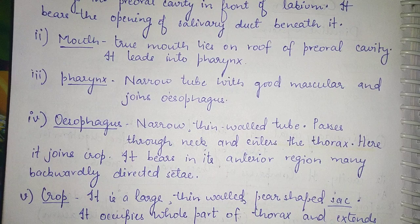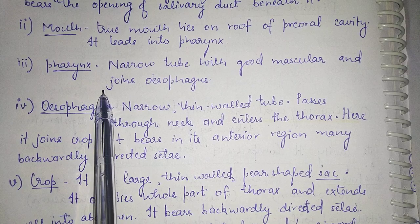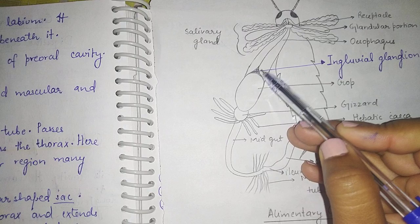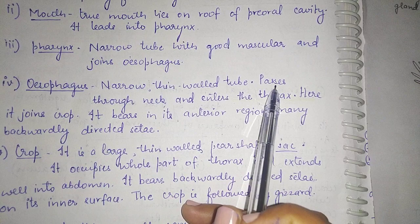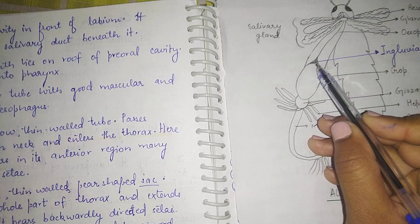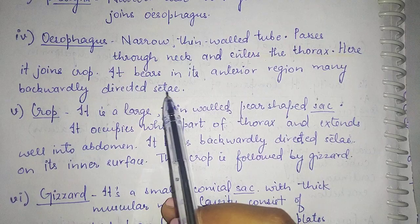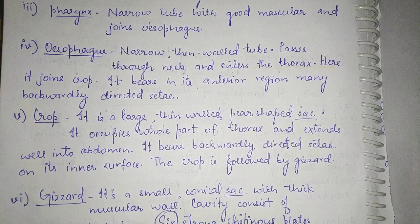The true mouth lies on the roof of the pre-oral cavity and leads to the pharynx. The pharynx is a narrow tube with good musculature and it joins the esophagus. The esophagus is a narrow thin-walled tube that passes through the neck and enters the thorax, where it joins the crop. The esophagus bears many backwardly directed setae in its anterior region.